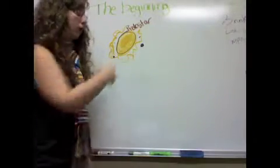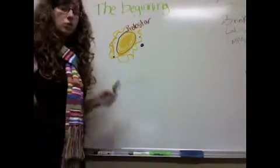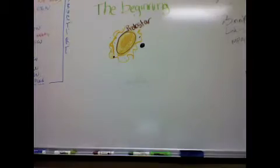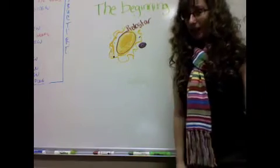Once one of the particles gets big enough, it can create enough of its own gravity to begin to pull other smaller particles towards it, thus accelerating the growth. These growing bits of matter are called protoplanets.